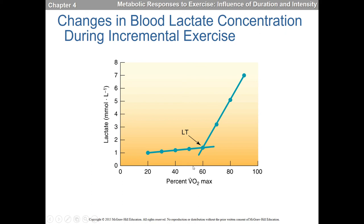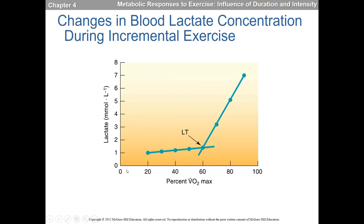The lactate inflection point happens around 50% of VO2 max in untrained individuals and between 60–85% in fairly trained individuals. Explanations include accelerated glycolysis — we have a massive need for ATP and a backlog of NADHs that need to donate their H so we can continue the glyceraldehyde-3-phosphate dehydrogenase reaction. Low muscle oxygen also plays a role, but the NADH backlog explanation makes the most sense to me.